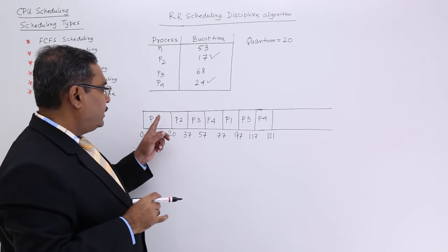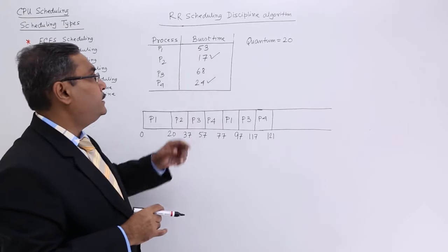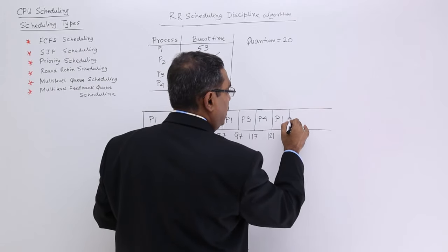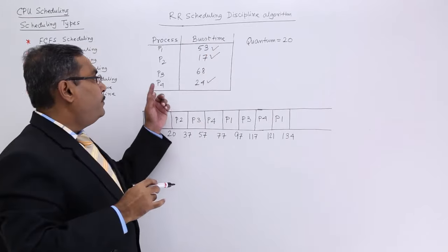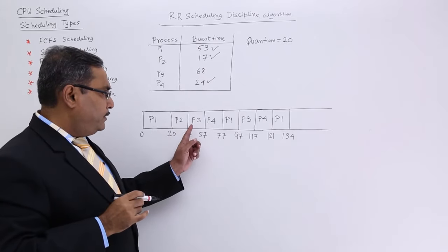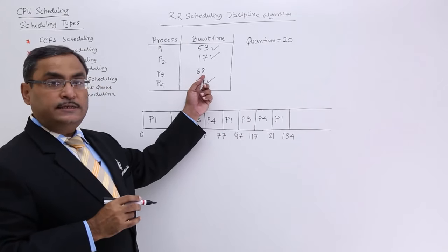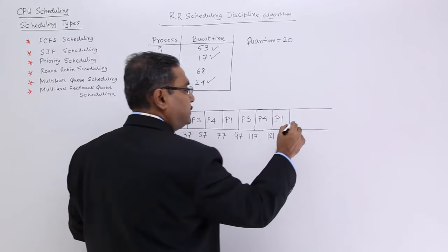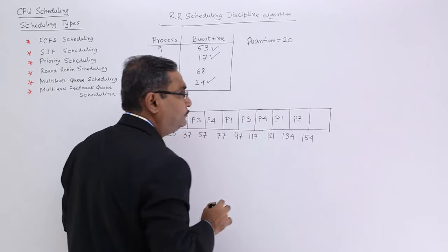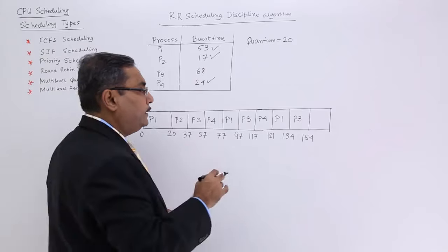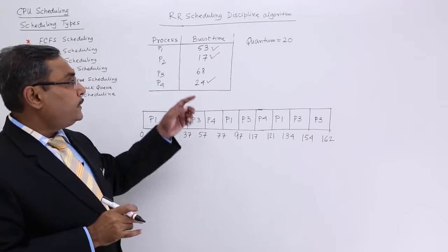P1 has got quantum for twice. So 40 units of burst time completed. Now it is remaining with 13. So P1 for 13 units of time. So it will be 134. So P1 got completed. So I am remaining only with P3. So how many times P3 got? First time, second time. So what is the total duration? 40. So 40 minus this 68, I am with the 28. So I shall give P3 two slots. First time 20 means 60. So now 8 remaining. So I shall give another 8. Let me go for addition. 53 plus 17, that is 70. 70 plus 68 means 138. 138 plus 24. What are you getting? 162. So they are matching. So I think I am in the right track.